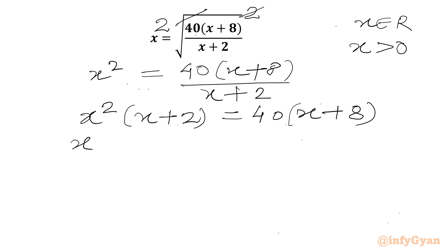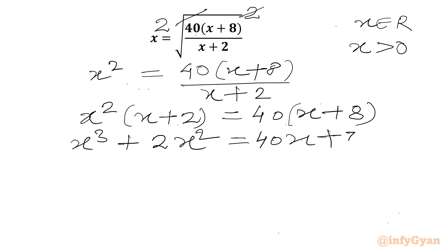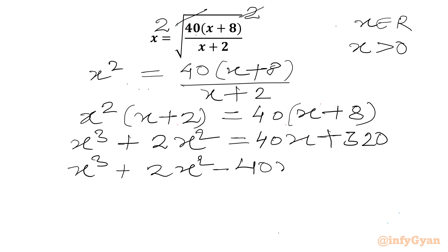Or we can write x cubed plus 2x squared equals 40x plus 320. Rearranging: x cubed plus 2x squared minus 40x minus 320 equals 0.